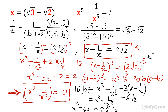So we have two very important results: x squared plus 1 over x squared equals 10, and x cube minus 1 over x cube equals 22 root 2. Now I have to find x power 5 minus 1 over x power 5. I will simply multiply both expressions — that is (x cube minus 1 over x cube) and (x square plus 1 over x square).